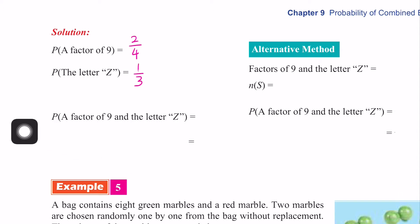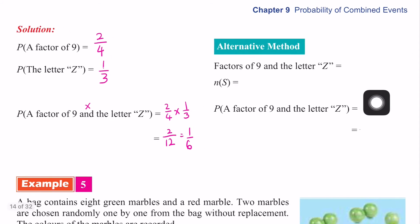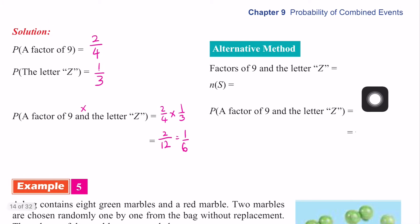And, what does 'and' mean? Multiply. So 2 over 4 times 1 over 3. So the answer is 2 over 12. We can simplify to 1 over 6. Or, an alternative method, we can use listing.